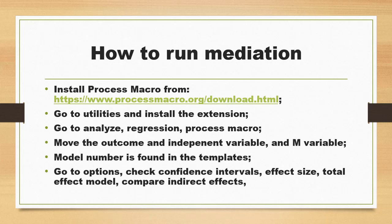In the Process macro dialog, move the outcome variable, the independent variable, and the mediator variable to their corresponding fields. The model number is found in the templates document that comes with the Process macro download. Locate the model that matches your conceptual framework and pick the corresponding model number in SPSS.